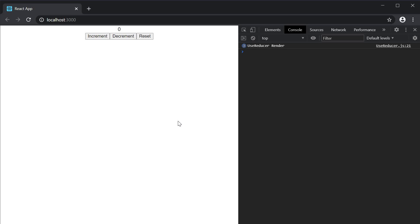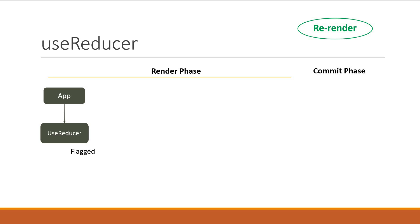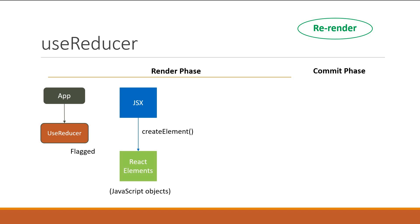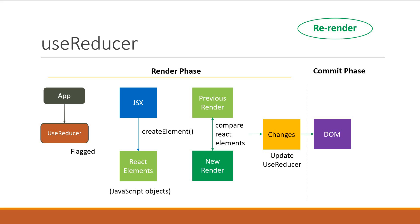Let's go over the render and commit phases again. We begin with the component tree — the App component and the useReducer component. When we click a button, the reducer hook's dispatch function is called, which flags the useReducer component as needing an update. During the render phase, React goes through the component tree, identifies the flagged components, uses createElement to convert JSX into a React element, diffs it against the previous render, identifies the changes, and hands them to the commit phase where the changes are applied to the DOM.